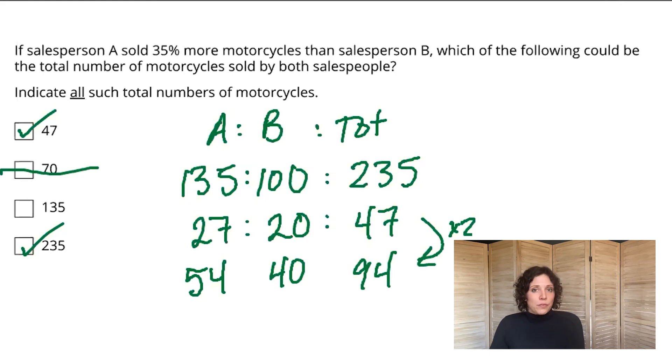Last, we're trying to test that 135. So we multiplied by two already. We'll take that reduced ratio and this time multiply by three since we're pretty close. And so if I multiply through, what I've got is 81 sold by A, 60 sold by B for a total of 141. And once again, we've moved past that possible number, meaning that we can't get that as a total. And so we can eliminate 135.